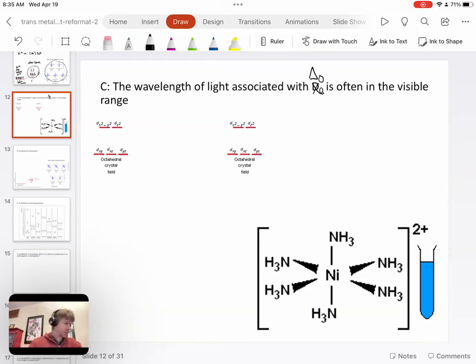And so we were just talking about on the last slide, so we had nickel two plus, and it was part of the complex ion with the ammonia. And we had the electrons one, two, three, four, five, six, seven, eight.